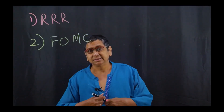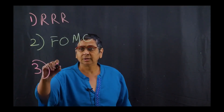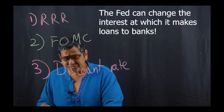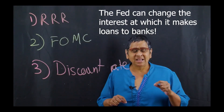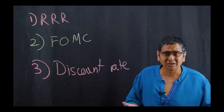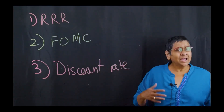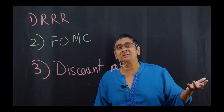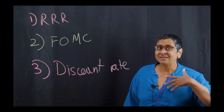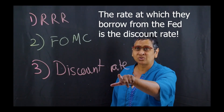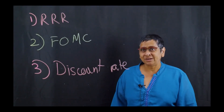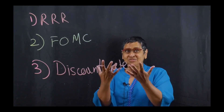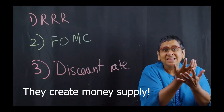The third tool is often called the discount rate — the Fed can change the interest rate at which it makes loans to banks. Just like I can go to a bank and ask for a loan, banks can go to the Fed. They do this when they see great lending opportunities and want more reserves. The rate at which banks borrow from the Fed is called the discount rate. Banks borrow reserves from the Fed, relend them, and in the process create money supply.